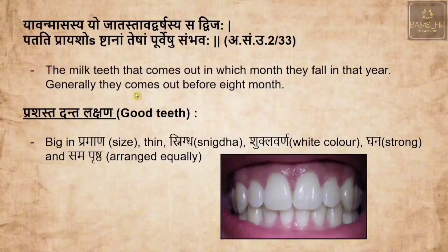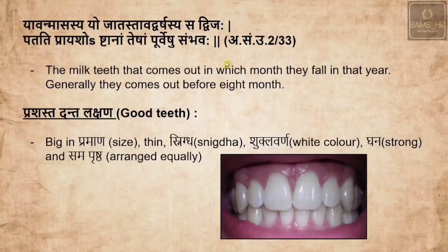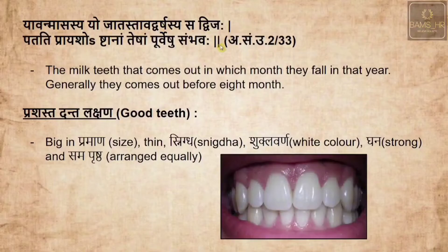Regarding milk teeth: Yavat masas yajata, swad varsya, sad vijaha — the milk teeth that erupt in a particular month will fall in the corresponding year. For example, if teeth erupt at the 4th month they will fall at the 4th year; if they come on the 5th month they fall at the 5th year. They generally come out before the 8th month.